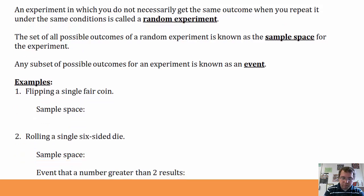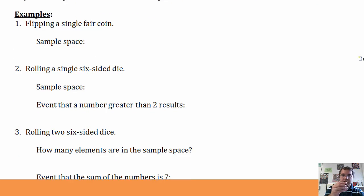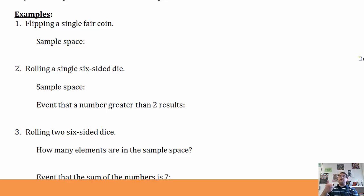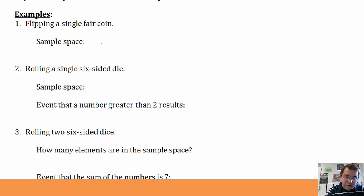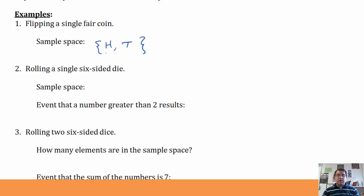Some examples. Let's say I take a single fair coin like this nickel. It's got heads, it's got tails. If I flip it, what are the possible outcomes? I can get tails or I can get heads. So the sample space consists of just heads and tails. I write it in set notation — it's the set of all possible outcomes. So I can get heads or I can get tails. It doesn't matter if I write the H first or the T first.